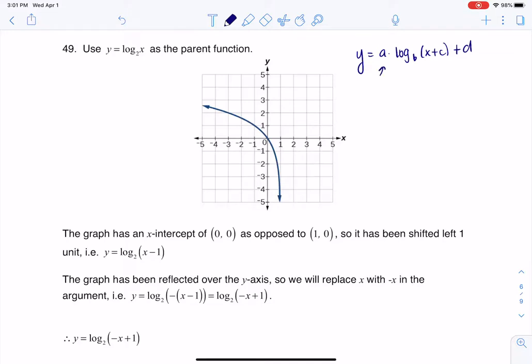So let's break them down. A is going to be the vertical stretch or shrinking. B is your base, C is going to be your horizontal shift, either left or right.